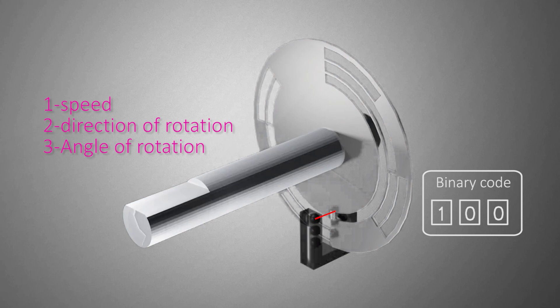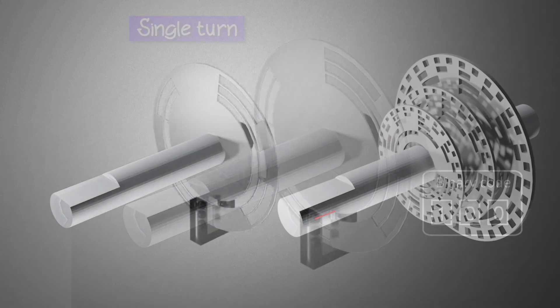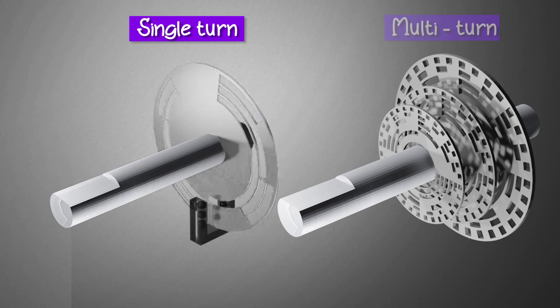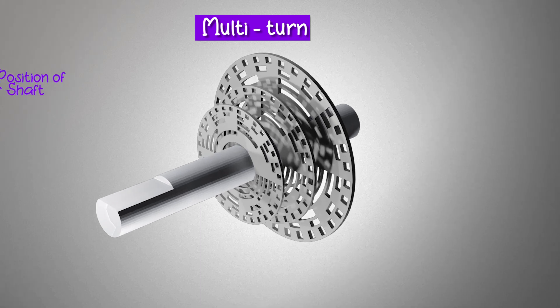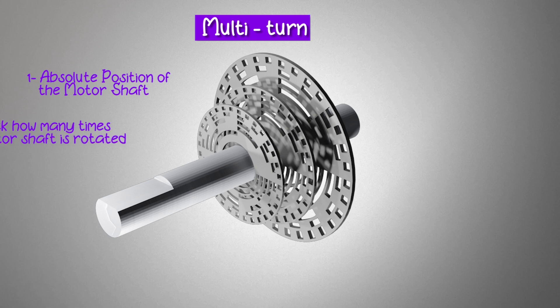From this, speed, rotation, and direction can easily be derived. There are both single and multi-turn absolute encoders available. Multi-turn encoders not only give you the absolute position of the motor shaft but also actively track the number of rotations the motor has made.